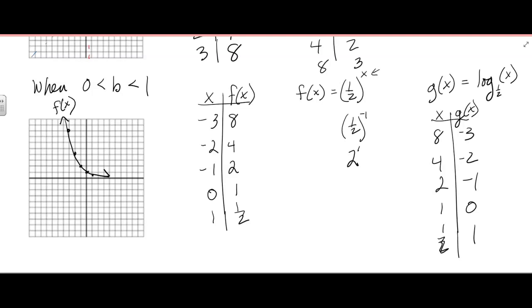And then how does that graph? All right. So we go out to 8 and we go down 3. We go out 4, down 2, 2, negative 1, 1, 0, right there. And then 1 half, 1, so right there. And it's going like this.